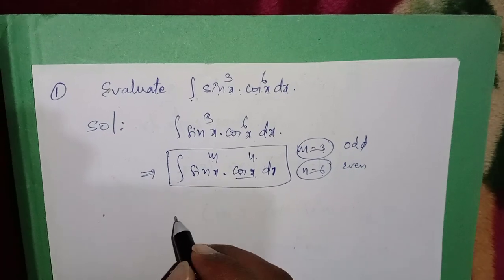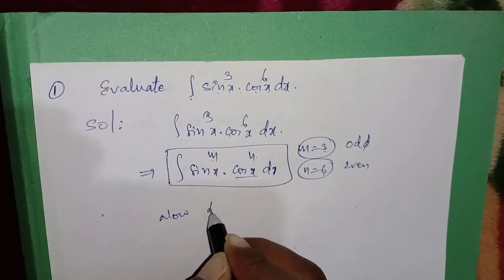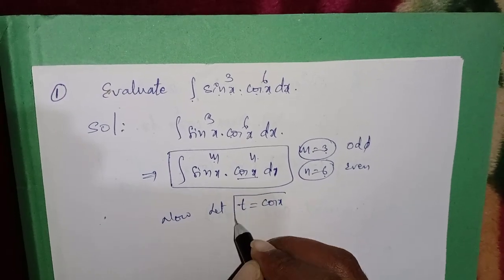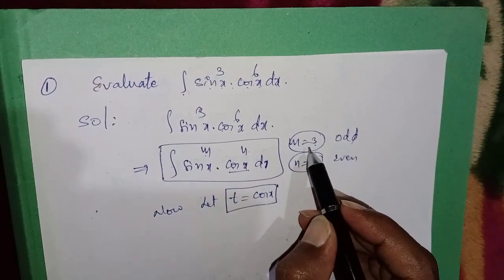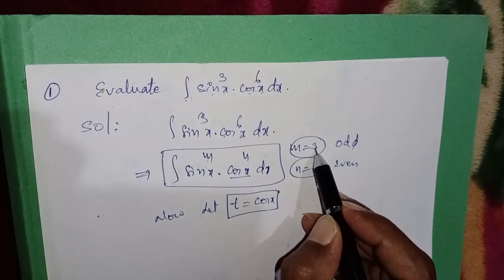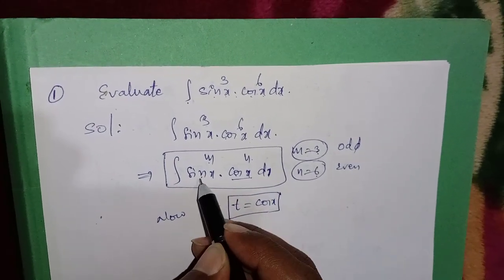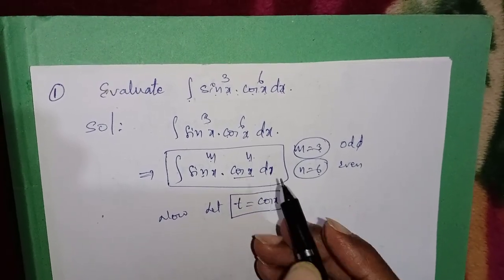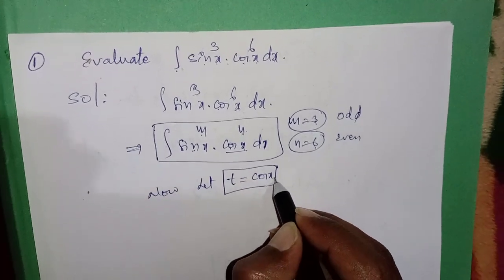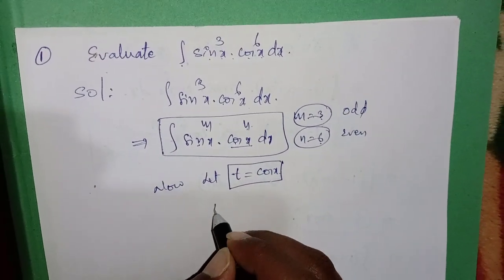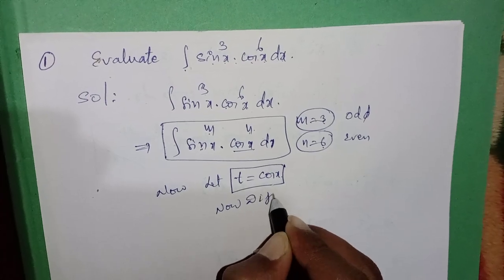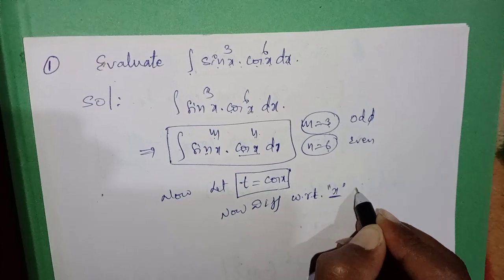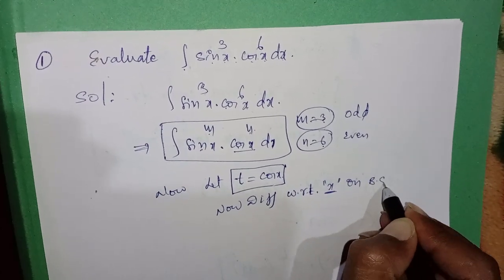Since the odd value 3 is the sin power and the even value 6 is the cos power, we let t = cos x. Now differentiate both sides with respect to x.